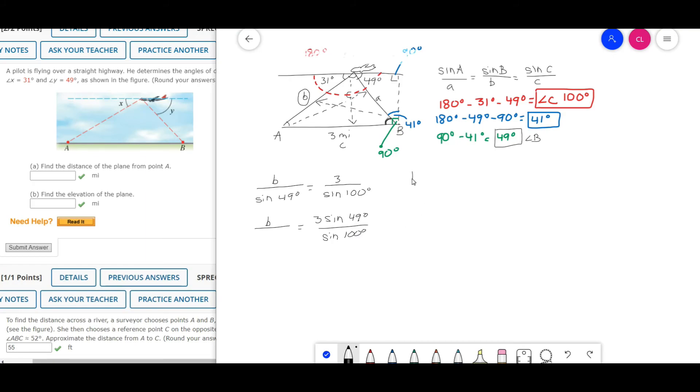And with that, we get side B to be approximately 2.30 miles. And that's the answer. If you want me to do part B, just let me know in the comments. Hope that helps.